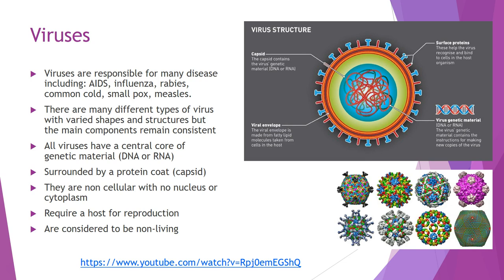Viruses are responsible for many different types of diseases in our society including AIDS, influenza, rabies, the common cold, smallpox, and measles. A lot of things that we have vaccines for are actually caused by viruses rather than bacteria. There are many many different types of virus, and how they vary is dependent on their structures and their shape.